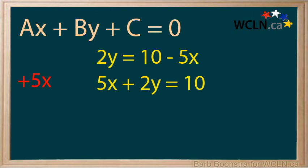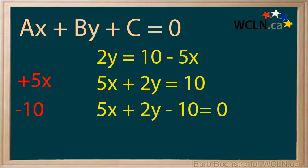Now get the constant 10 on the left-hand side of the equation. Subtract 10 from both sides of the equation to do this. The equation 5x + 2y - 10 = 0 is in general form.